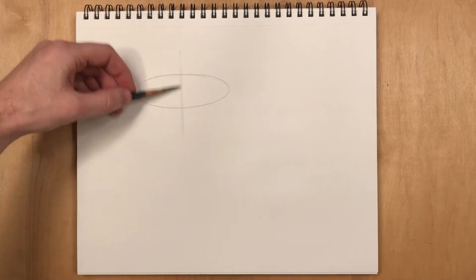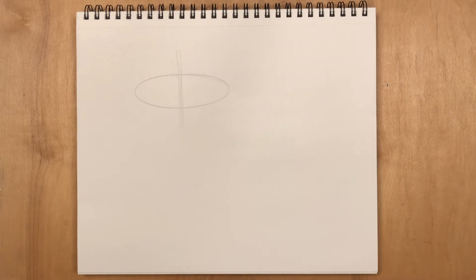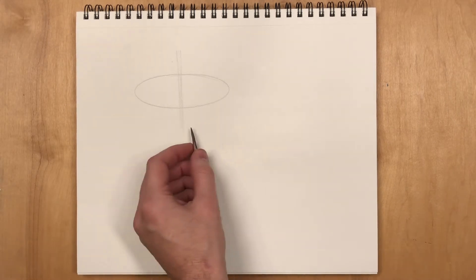And then I'm going to find that minor axis. That's the straight line that passes through the narrowest part of the ellipse.